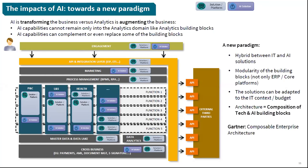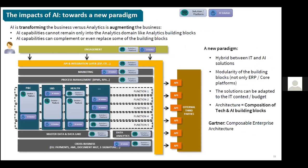Coming back to the architecture view, how we can change the way we provide capabilities for our business today is to have a more hybrid architecture — the traditional platforms that still make our business work, combined with AI capabilities integrated across different parts of our architecture. Gartner now talks about composable architecture, which is a composition of AI capabilities and IT capabilities that live together as an ecosystem.